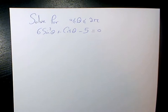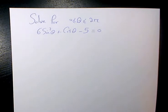In this video I have this trigonometric equation which is 6 sine squared theta plus cosine theta minus 5 equals to 0. And we need to solve it for theta between 0 and 2 pi.